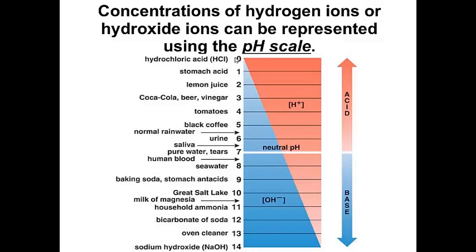And acids, the strongest acid would be down at pH zero, which would be hydrochloric acid. Your stomach acid is between pHs one and two, so lots of hydrogen ions. As you get closer to neutral, the number of hydrogen ions and hydroxide ions is the same.